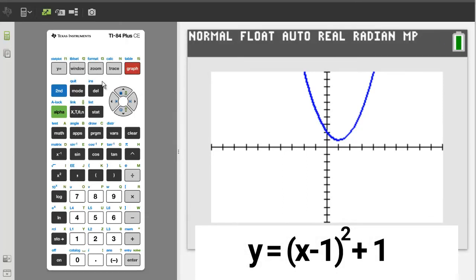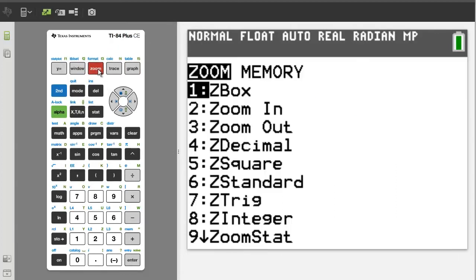To determine the coordinates of the vertex, it is helpful to zoom in on the vertex area of the parabola. We will zoom in on the vertex using a z box and the zoom button. Press the zoom button. We want number 1, z box, so press the 1 button.